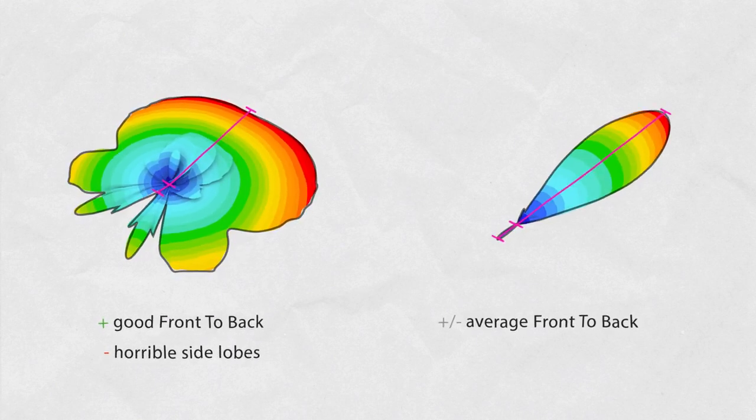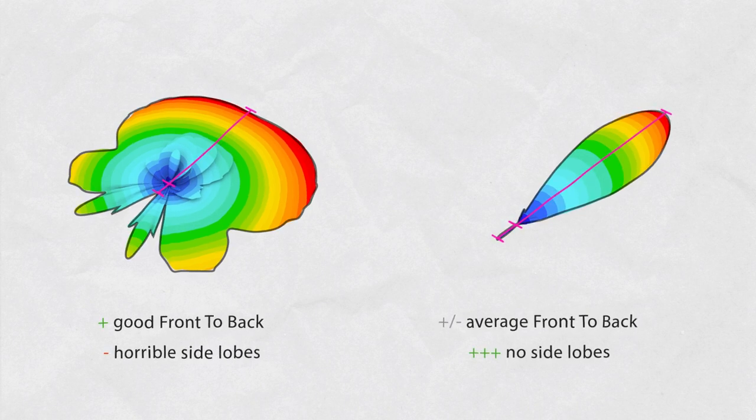This is an example of an antenna with good front-to-back ratio but horrible side lobes. But this is an antenna with average front-to-back ratio but almost non-existent side lobes. Front-to-back ratio is merely a marketing gimmick.